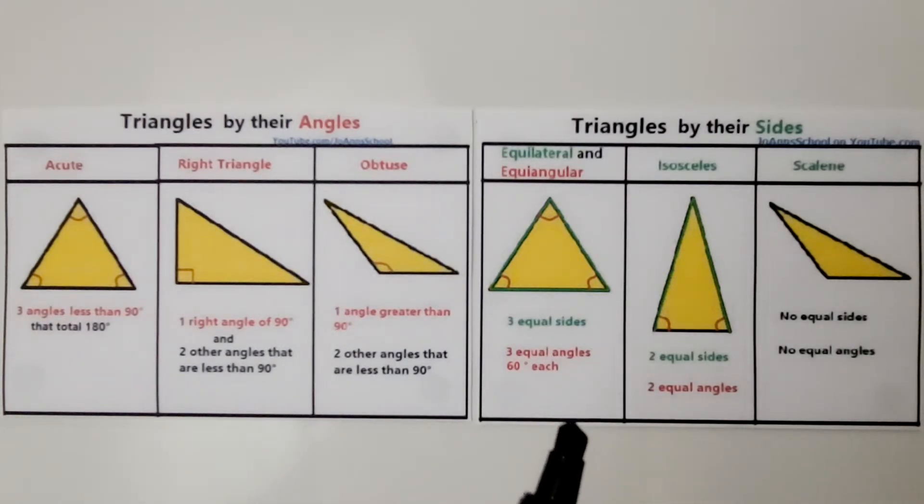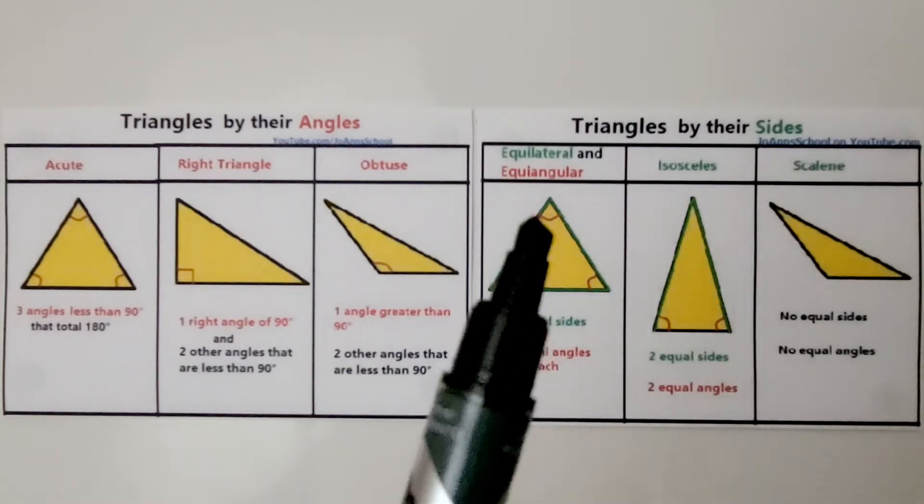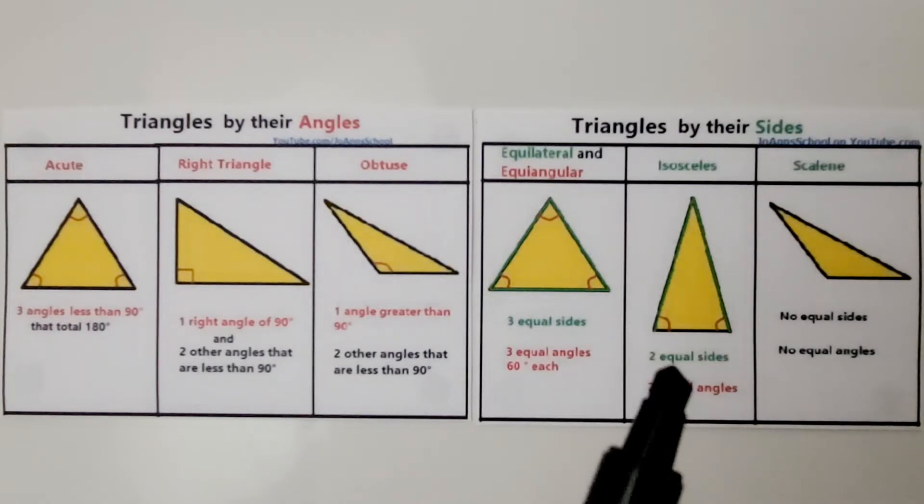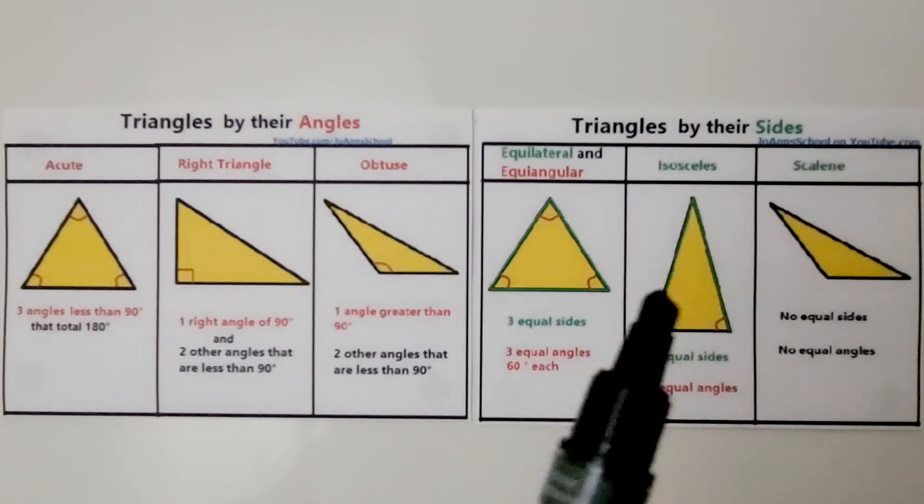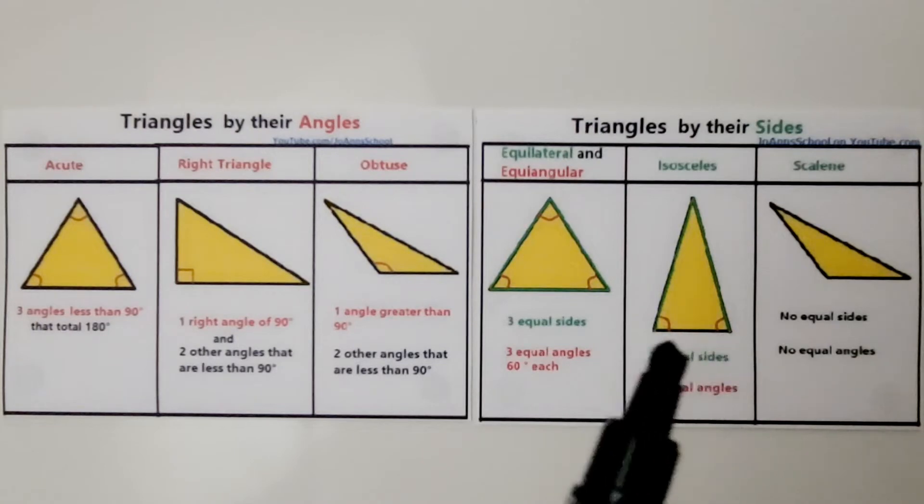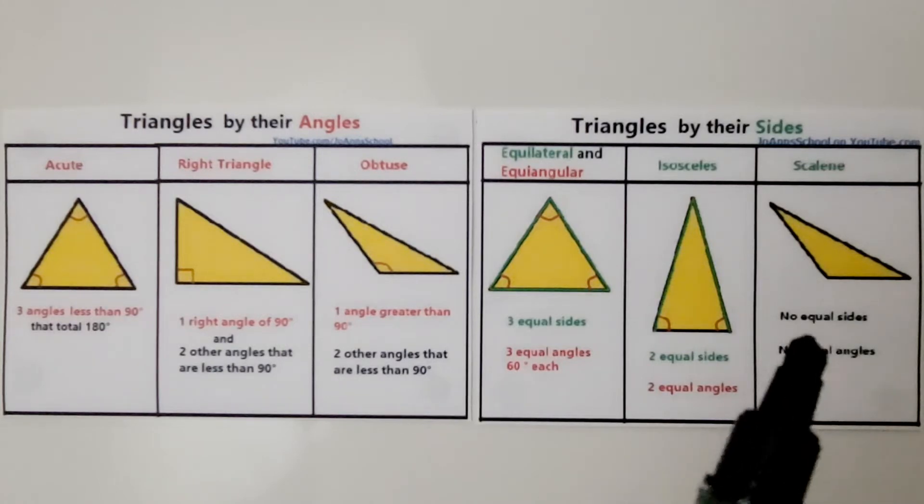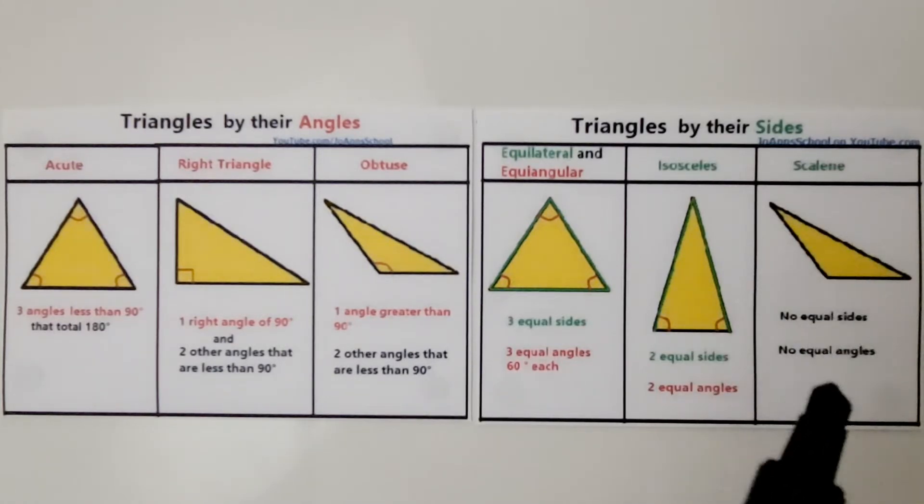We can also categorize them by their sides. If all the sides are the same length, then it's an equilateral triangle. If it has two equal sides of the same length and then a different side length, then it's an isosceles triangle. And if it has no equal sides, all three sides are different lengths, it's a scalene.